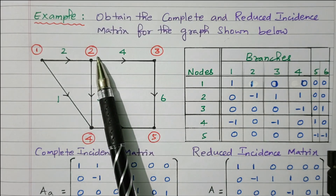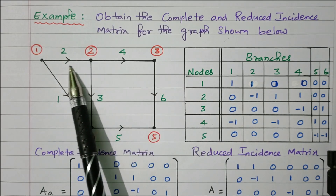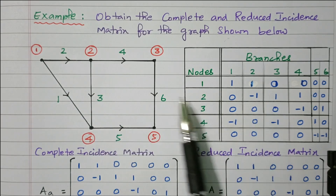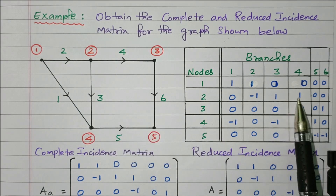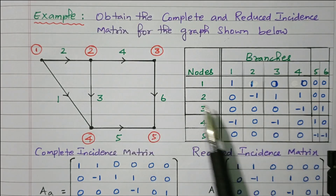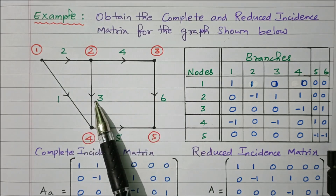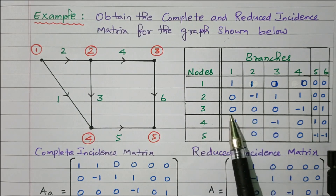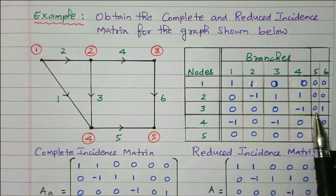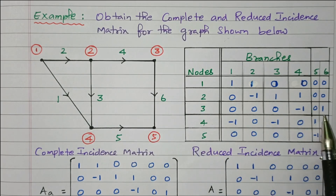For node three, branches one, two, three, and five are not connected — zero. Only branches four and six are connected. Branch four is coming inside — minus one. Branch six is going away — plus one.